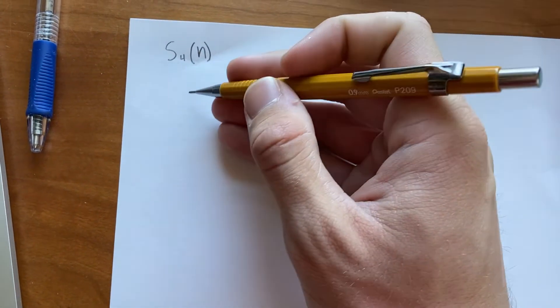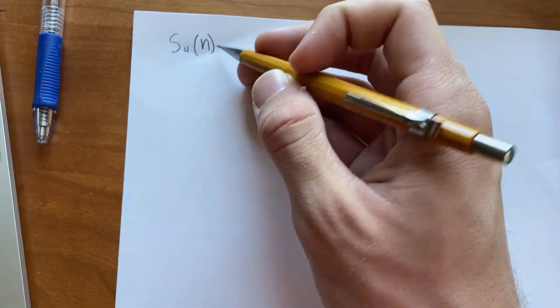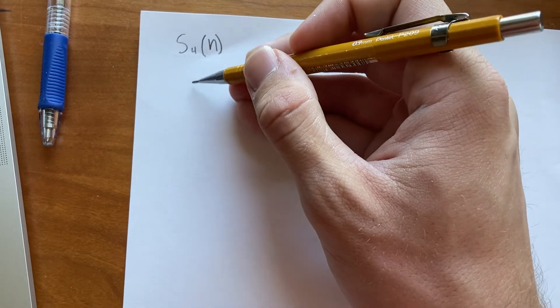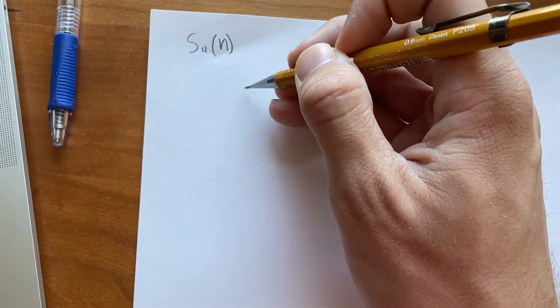So the idea is we're going to define S4 of n to be the number of ways for some natural number n to write it as a sum of four squares of integers.